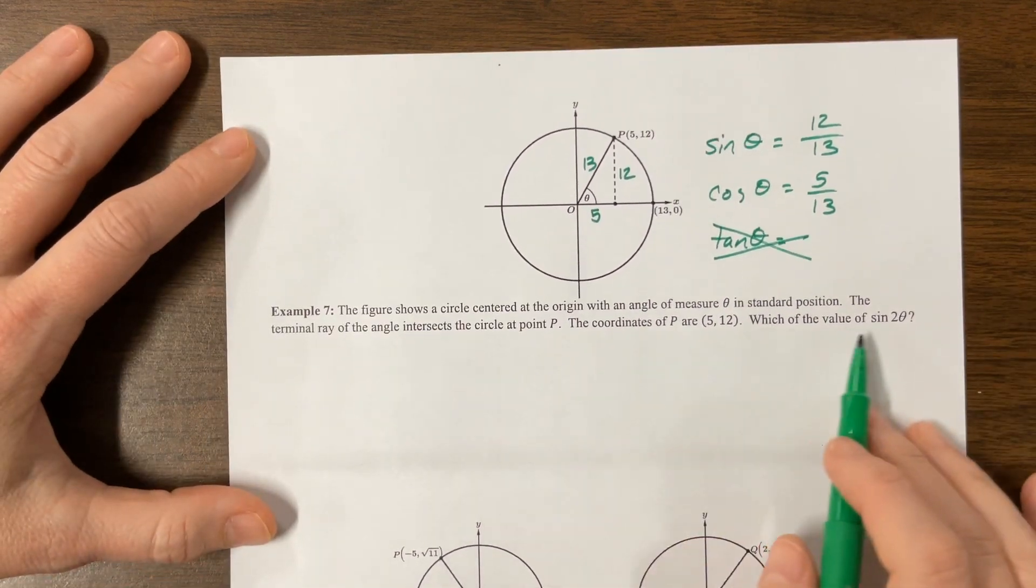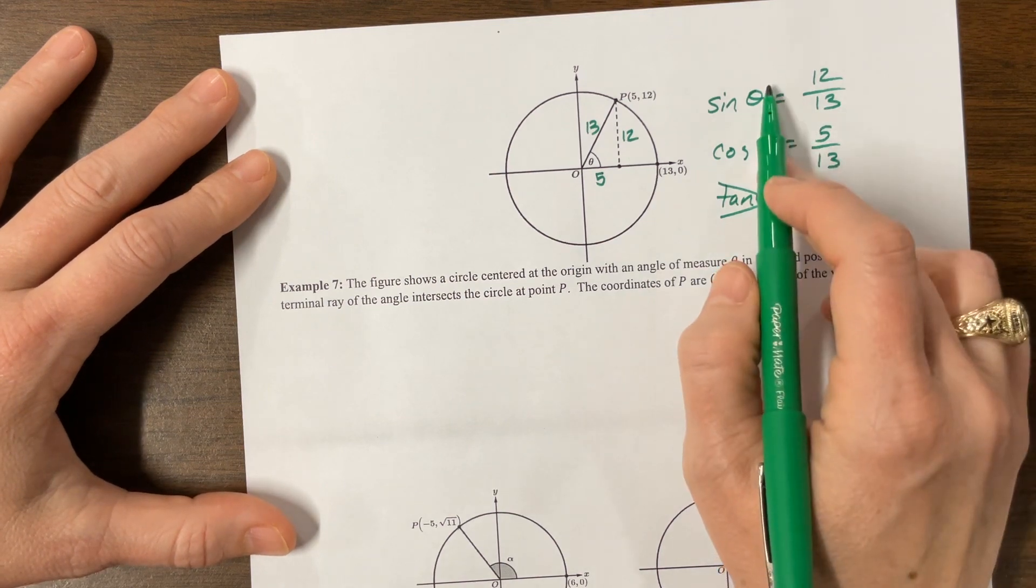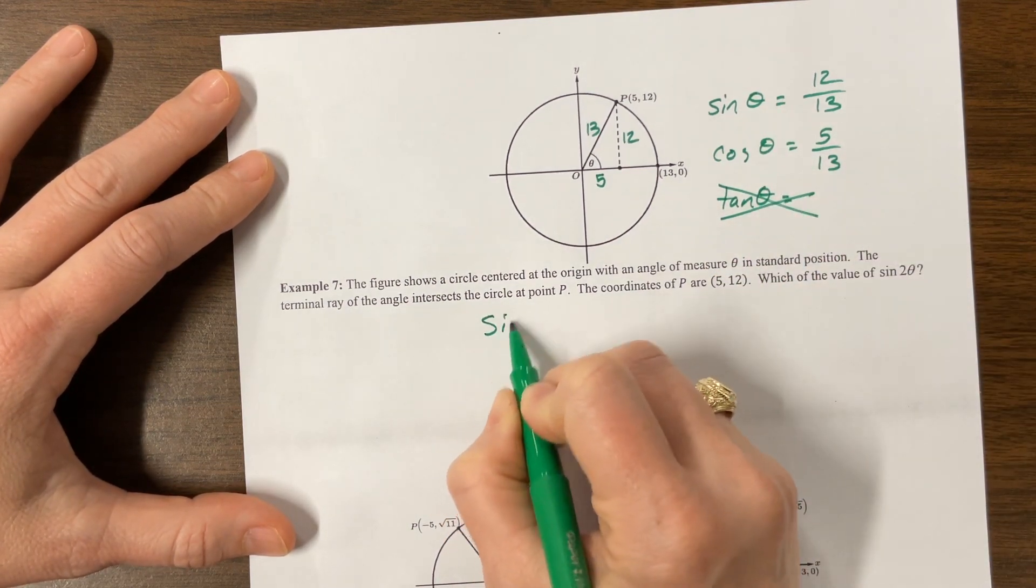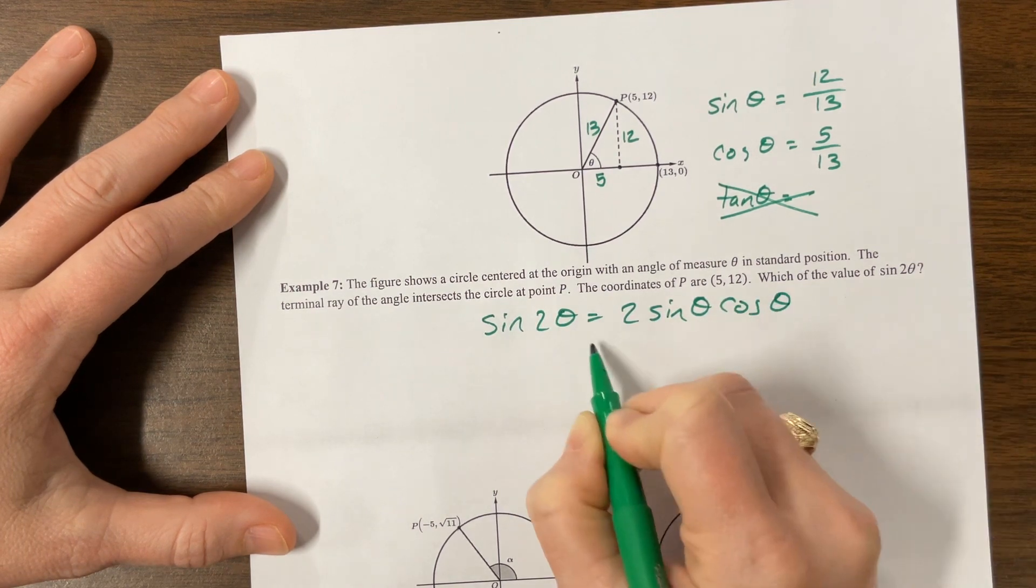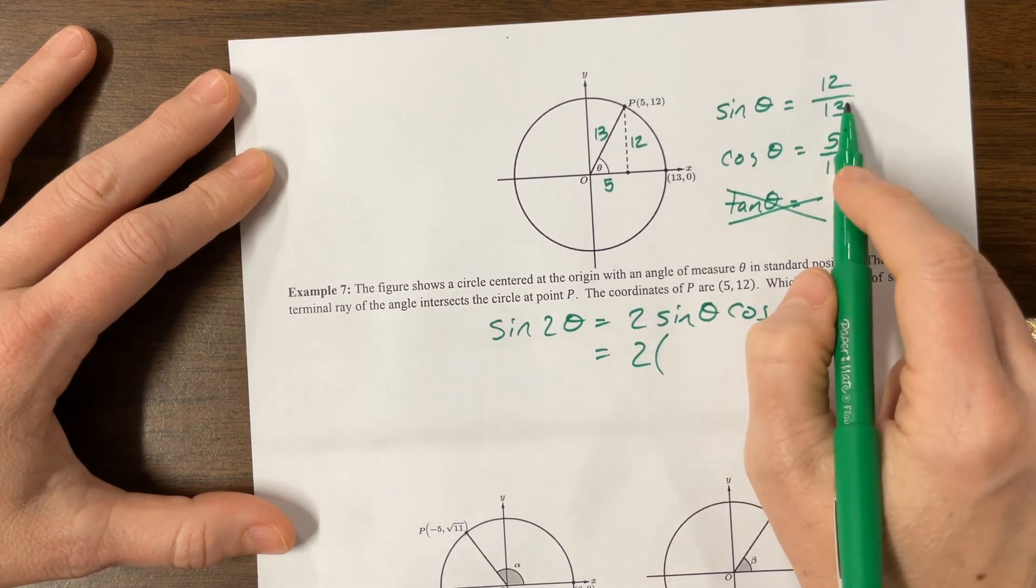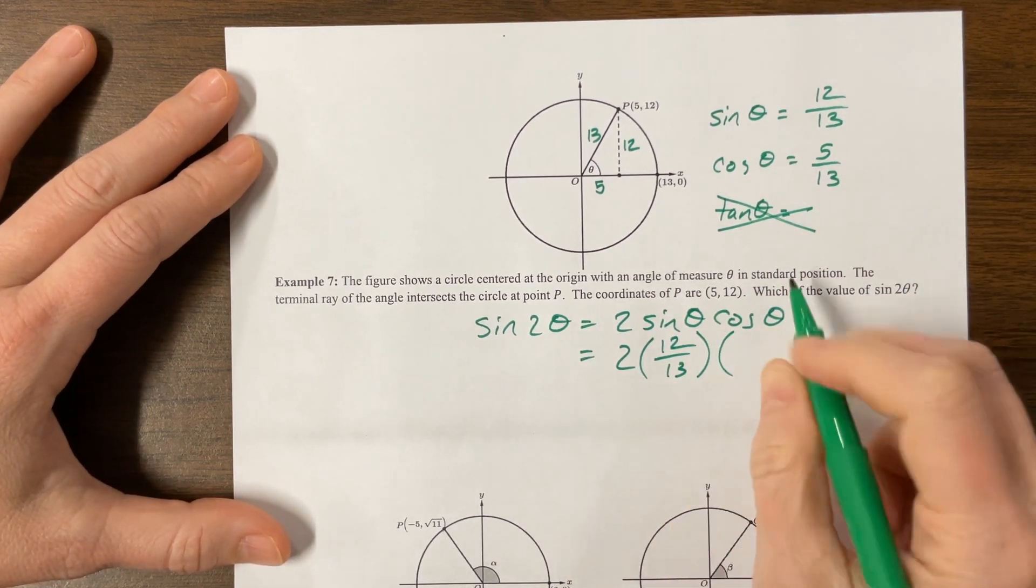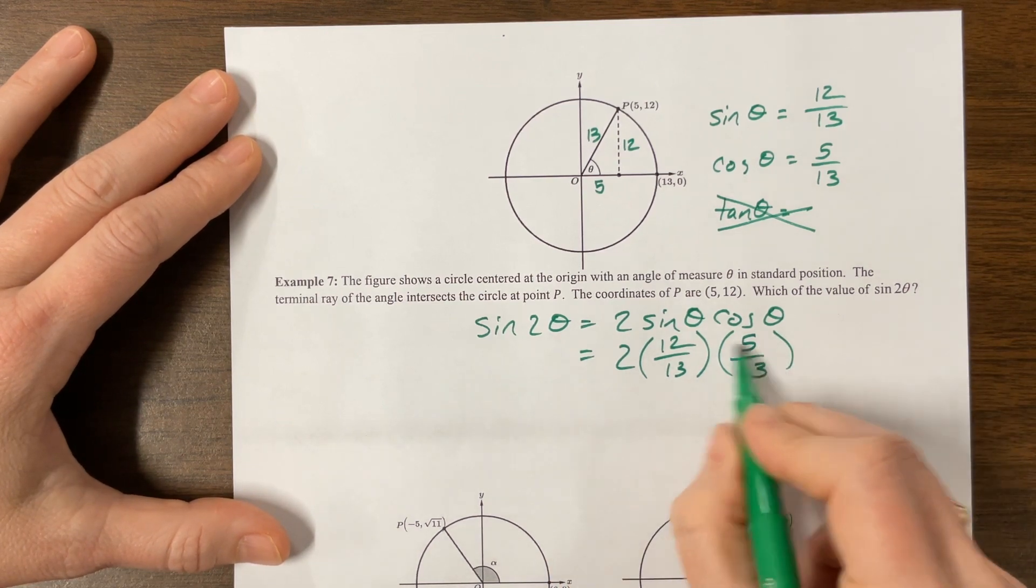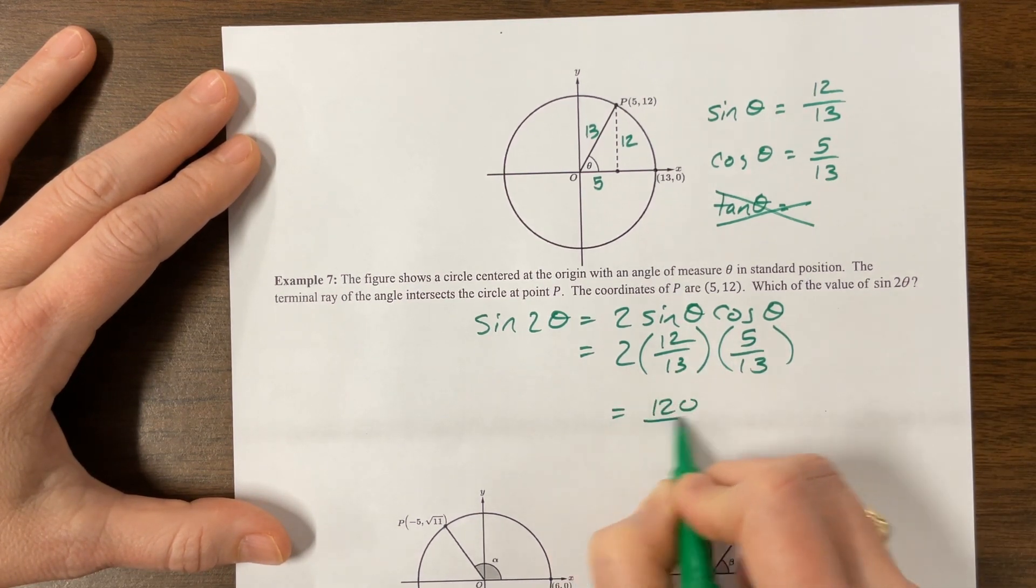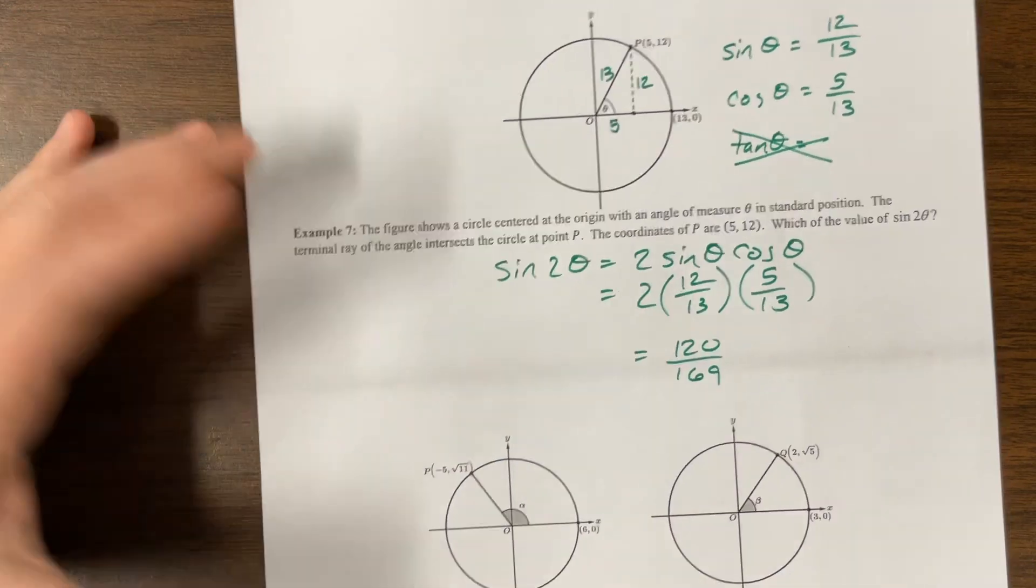And now they're asking us to find sine of 2 theta. Well, we don't know sine of 2 theta, but we do know sine of theta and cosine of theta, and sine of 2 theta is equal to 2 sine theta cosine theta, which is 2 times, what did we just write down, sine of theta is, I lied, 12 over 13, and cosine is 5 over 13. 2 times 5 is 10, that's 120 over 169. There you go.